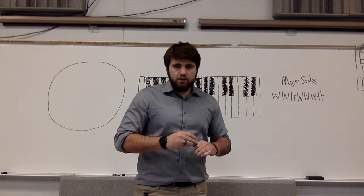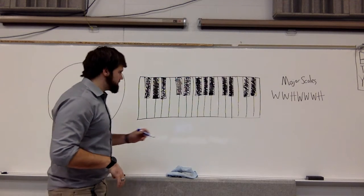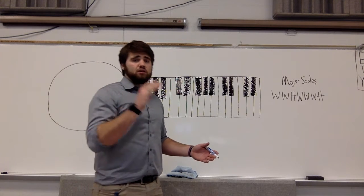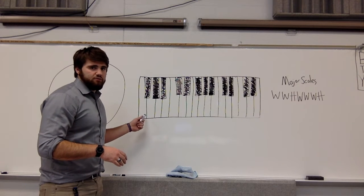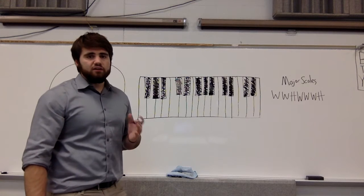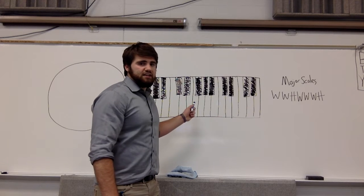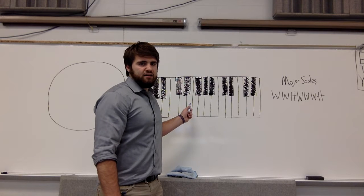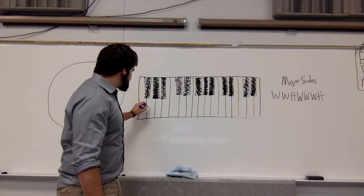We are going to do the G scale. First things first, we need to find G. There are two ways to do it. You can find groups of twos and threes. Here's a group of three — on the first group of threes, all the way on the left is F, so you know that's G. And if you start off with the group of two, you know this is C on the far left, D in the middle, and E on the right. So you go E, F, G. Either way, this is G.